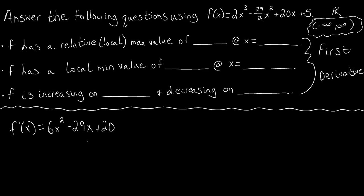We see that this derivative is a quadratic, which means it's defined for all x over negative infinity to infinity. We don't have any points where this derivative could be undefined, so all we really need to find is where f prime of x equals 0. These will give us our critical points.